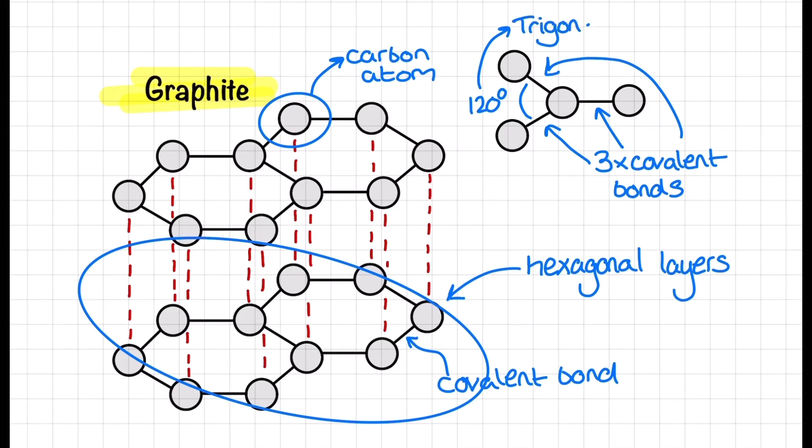On a final note about graphite, if you were to look up carbon on the periodic table you would see that it's in group four. This means it has four electrons in its outer shell. Three of them I've described as being involved in covalent bonds but where's the fourth electron?